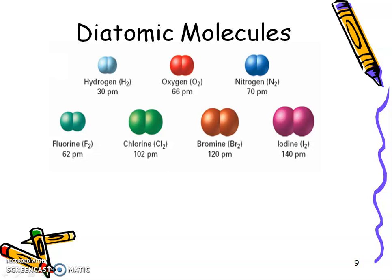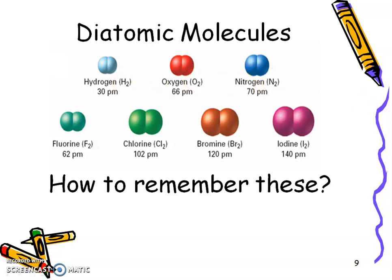So diatomic molecules are going to be really important because they are going to help us measure the atomic radius. And what do I mean by a diatomic molecule? Well, these seven elements will never exist by themselves. In other words, if I say to you I need some oxygen to breathe, you are not breathing in just plain old O. You are actually breathing in O2.